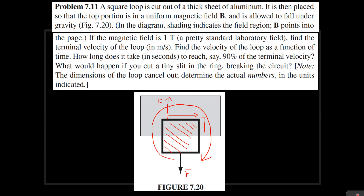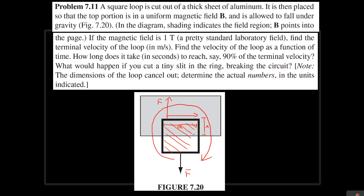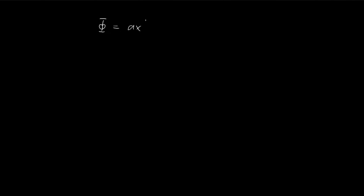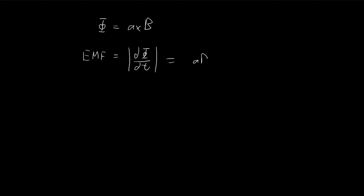Let me define this length as x and this length over here as a. First, let's try to find the flux. The flux is area times the magnetic field, so it equals a times x times B. The induced EMF, once the loop starts falling, is the change in flux. We're only concerned with the magnitude, so we get a·B·(dx/dt).